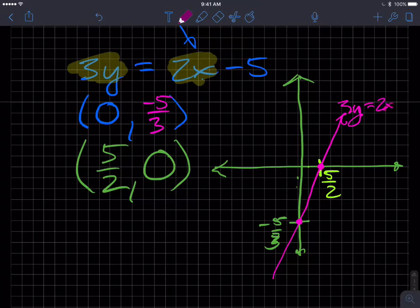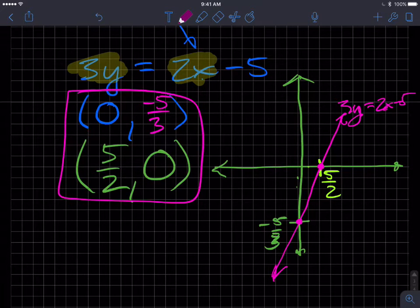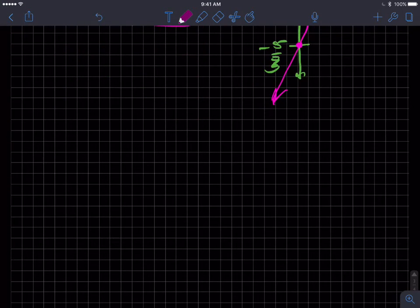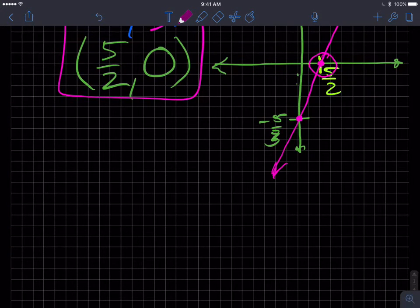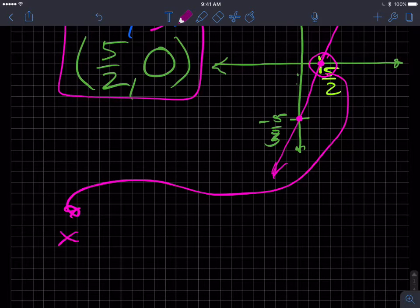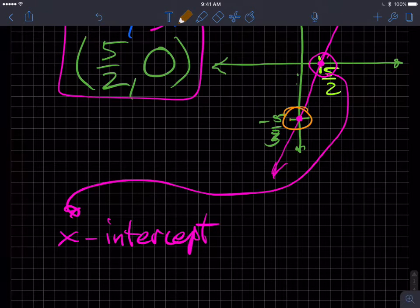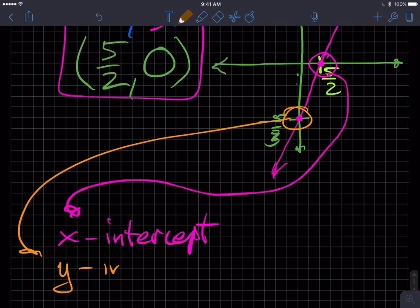This is 3y equals 2x minus 5. And so there's a representation of all of the solutions for that equation. This information right here is referred to as the following. Let's do it from here. This is the x-intercept. And this is the y-intercept.